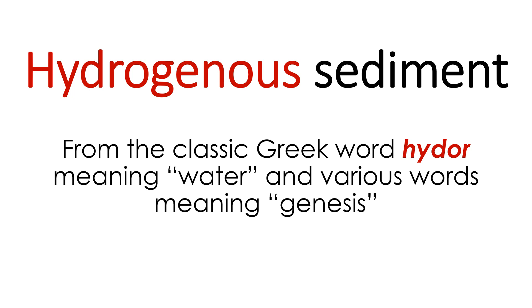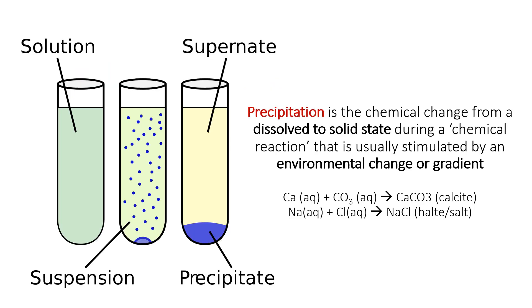The term hydrogenous sediment comes from the classic Greek word hydro, meaning water — hydrogenous sediment comes from water. It is also sometimes referred to as chemical sediment. It forms from chemical reactions that cause materials dissolved in water to precipitate. Precipitation is a chemical change from an aqueous state to a solid state, usually triggered by an environmental change such as an increase in temperature, or an increase in the concentration of dissolved materials.